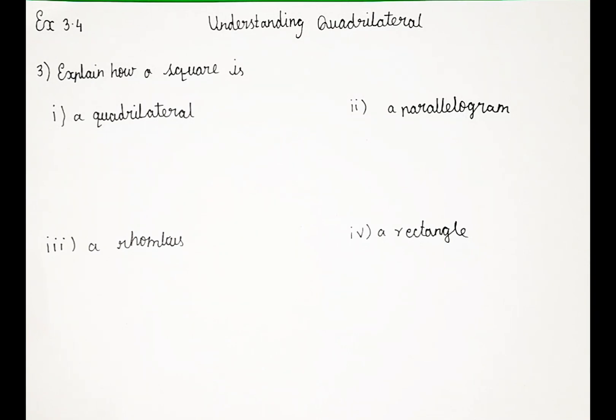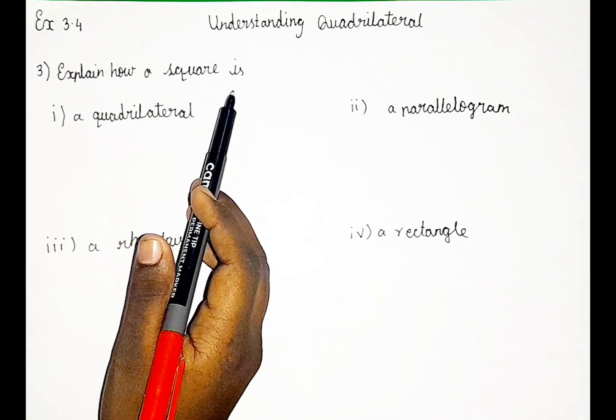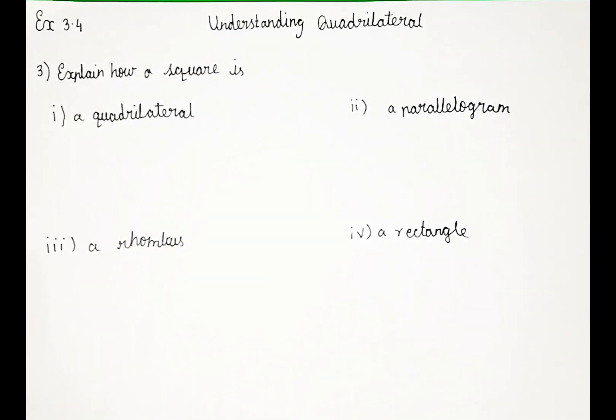So guys, let's read the question. Explain how a square is a quadrilateral. So the first substitution is we have to explain how a square is also a quadrilateral.